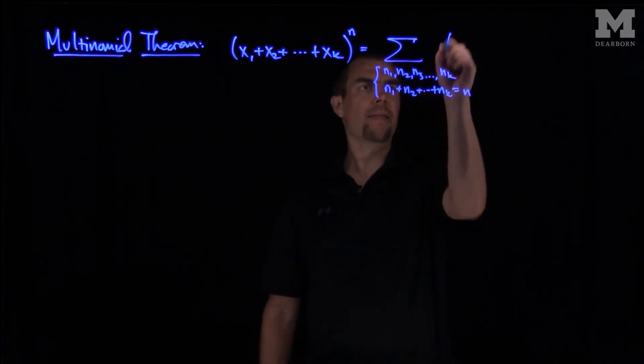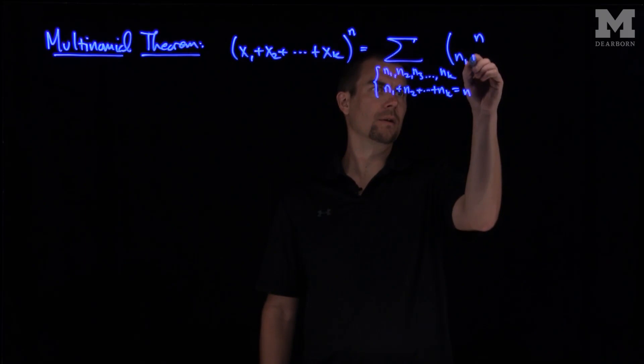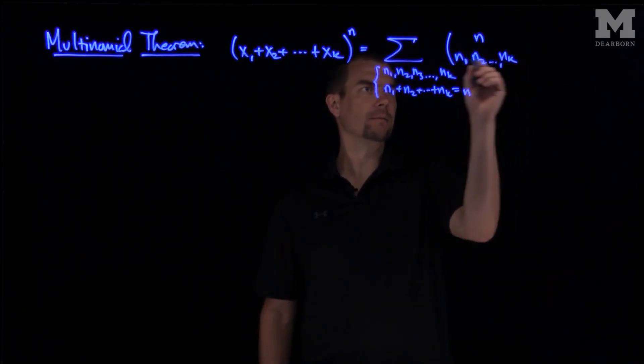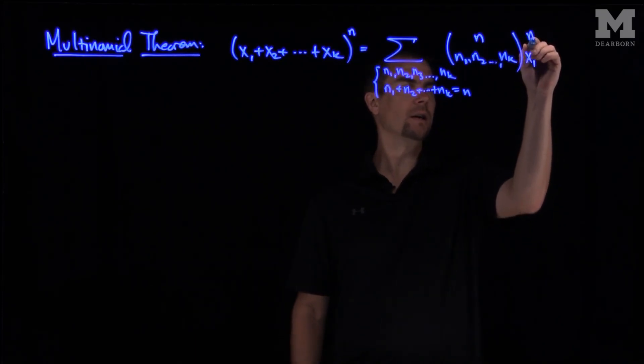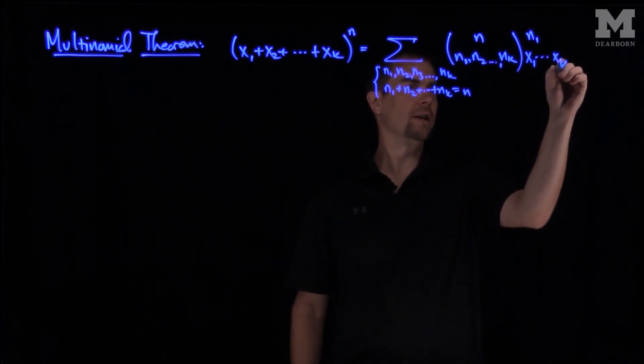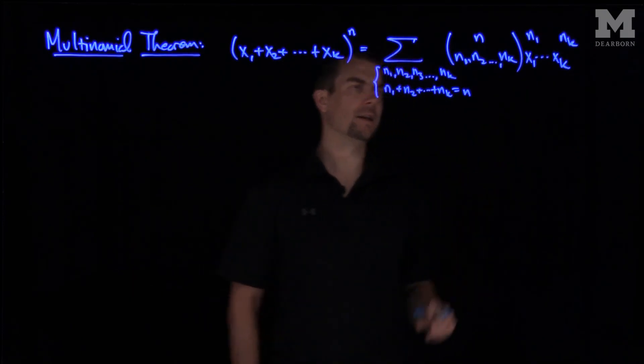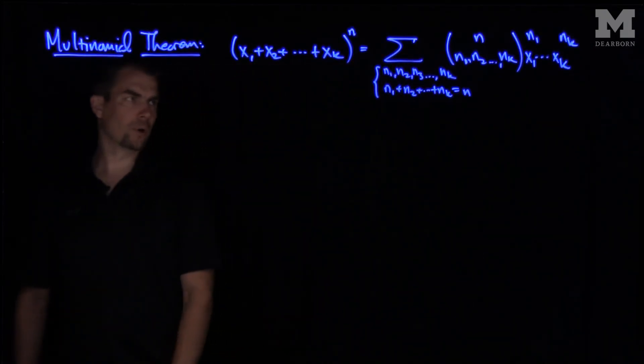And then I have the Multinomial Coefficient, n choose n₁, n₂, nₖ, and then x₁ to the n₁, xₖ to the nₖ. This is our Multinomial Theorem. So let's see an example of this.